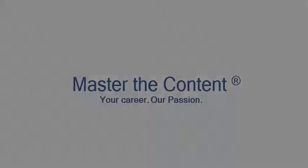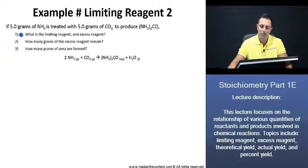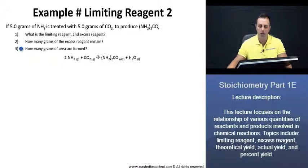Your career, our passion. Example limiting reagent 2. If 5 grams of ammonia is treated with 5 grams of carbon dioxide to produce urea, what is the limiting reagent and excess reagent? How many grams of the excess reagent remain? And how many grams of urea are formed?